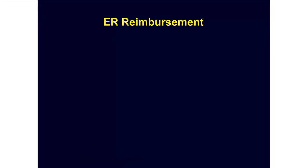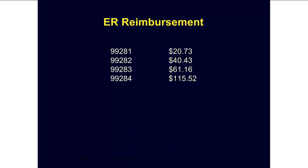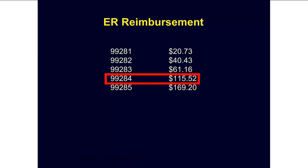Here are the Medicare allowable charges for ER E&M services. It's important to get the code right because there's a big difference in reimbursement between the various levels of care. It is most important to be able to tell the difference between a Level 3 visit and a Level 4 visit, because the reimbursement increases by an astonishing 89% between these two levels of care.